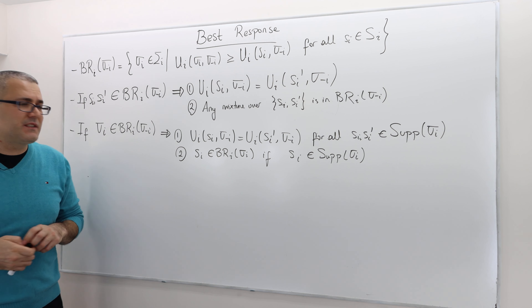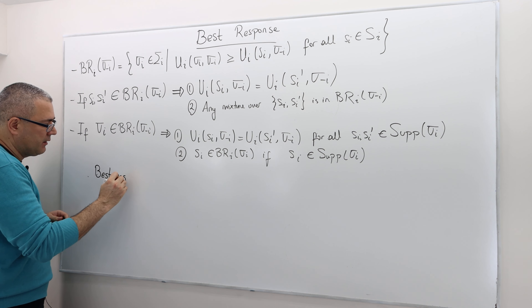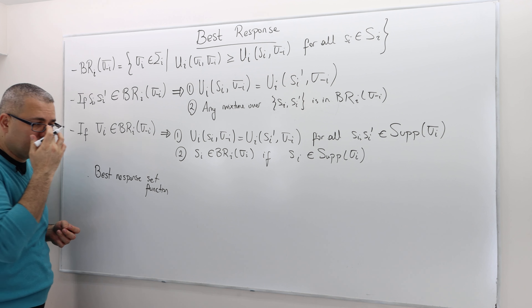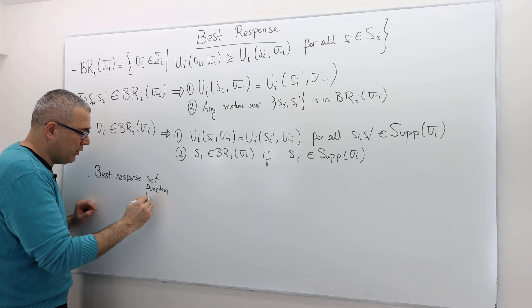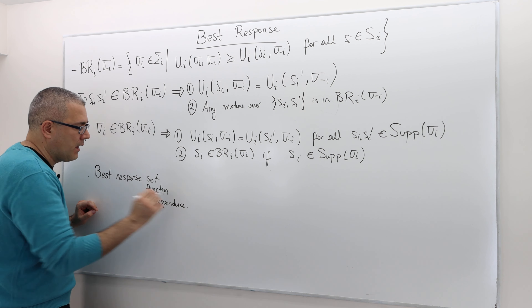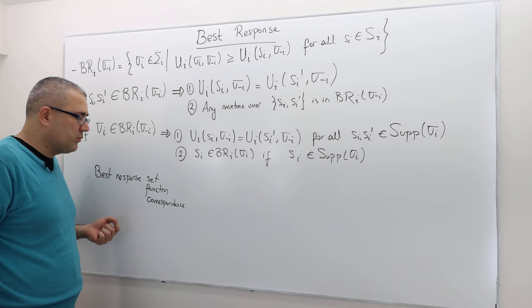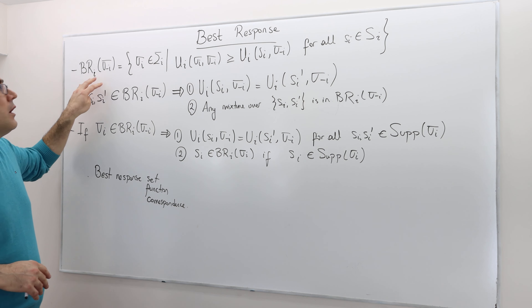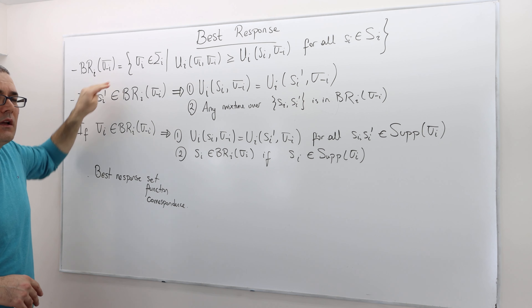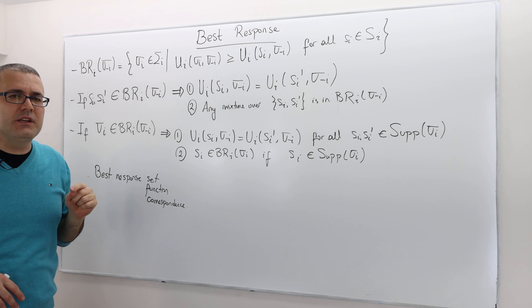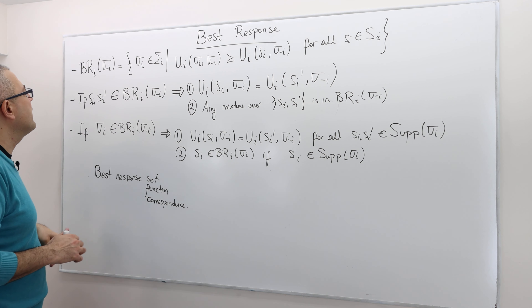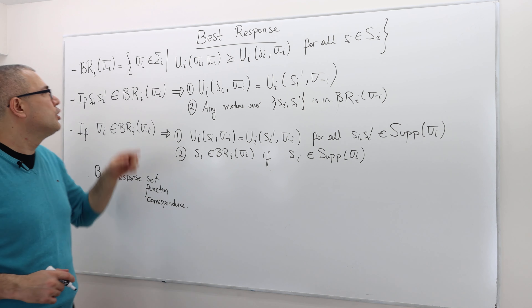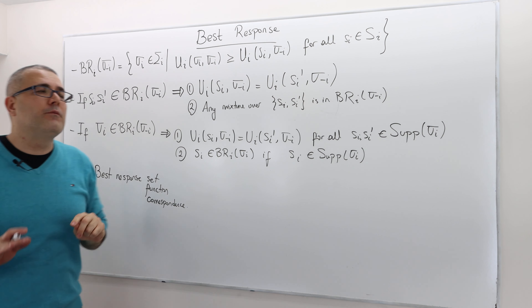Now I'm going to define a best response set — sometimes called a best response function, but the most correct title would be best response correspondence. It's not a function because for some values, it may take a set value: for some strategy profile the best response may have just one single element, one single strategy, but sometimes it has many strategies.